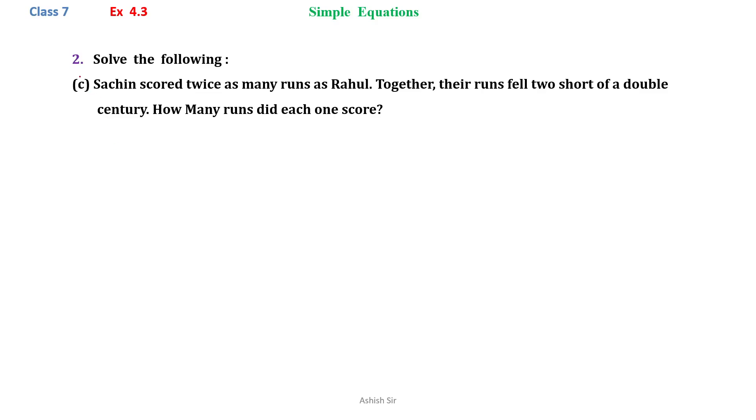Exercise 4.3 question number 2. Sachin scored twice as many runs as Rahul, so here we can write down the situation that Sachin's score is twice Rahul's score. Twice means multiply by 2.